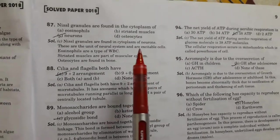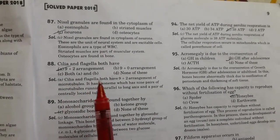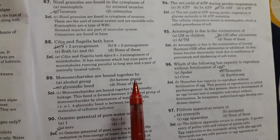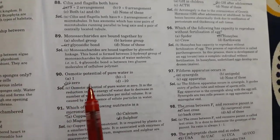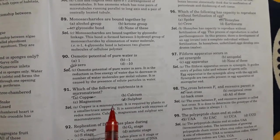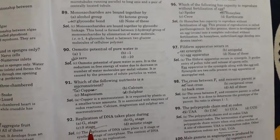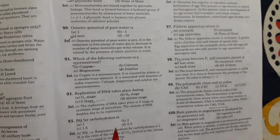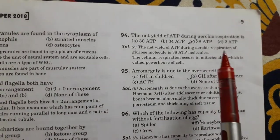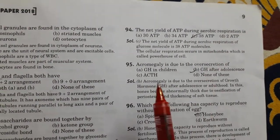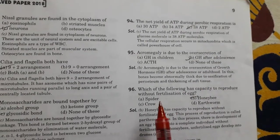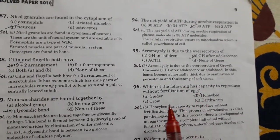Next is Nissl granules are found in the cytoplasm of neurons. Next is cilia and flagella both have nine plus two arrangements. The next question is monosaccharides are bound together by glycosidic bonds. Next is osmotic potential of pure water is zero. Next question is which of the following nutrients is a micronutrient. So copper is a micronutrient. Next replication of DNA takes place during S stage. Next RQ for carbohydrate is one. Next question is the net yield of ATP during aerobic respiration is 38 ATP. Next is acromegaly is due to the oversecretion of GH after adolescence. Option B is right.